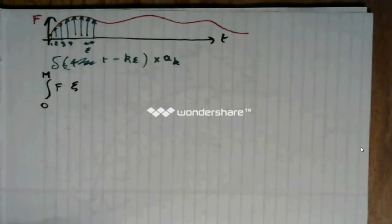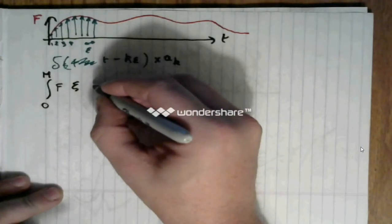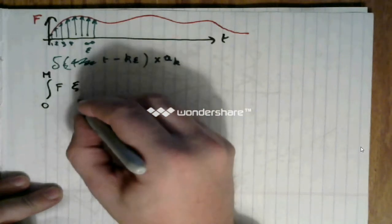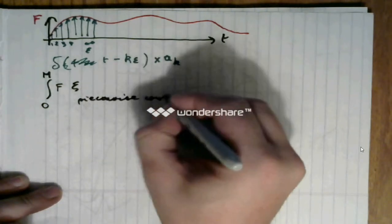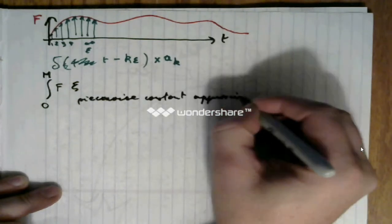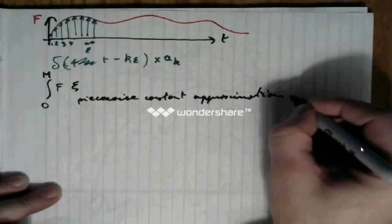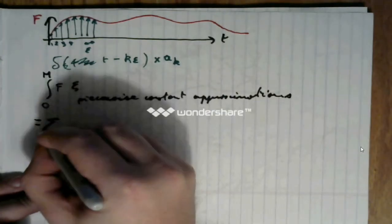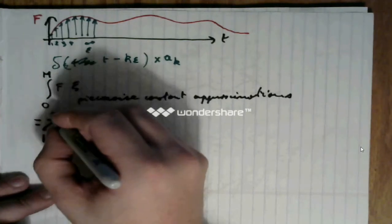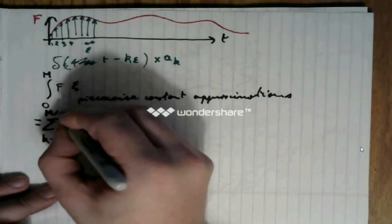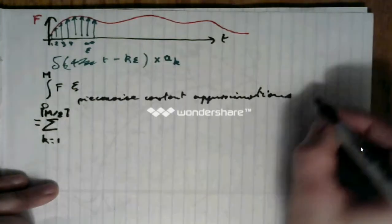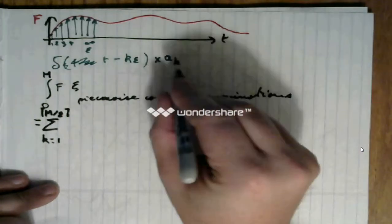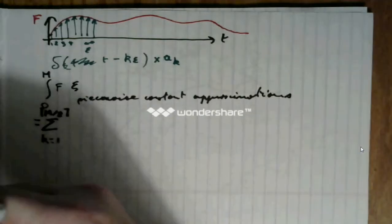from 0 to whatever bound m you might be interested in, then I can write that this is, and we're going to use the standard piecewise constant approximations.